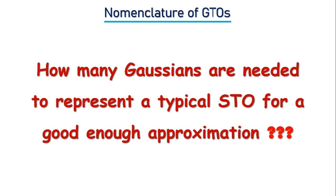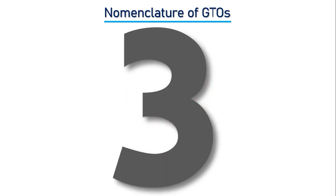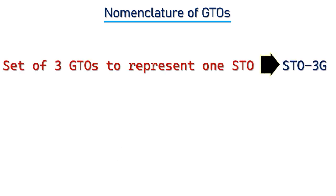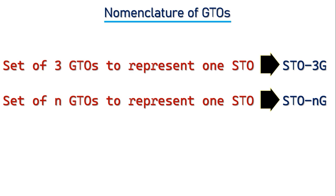Please pause this video now and write your guess in the comment box. When I first learned about this, I thought for a good enough representation we would need at least 20 GTOs, or 50 or 100 would be better. But the real number is often only 3 GTOs, which are more than sufficient. If we represent 1 STO by 3 GTOs, this combination is called STO-3G. Similarly, for N GTOs, it is called STO-NG.